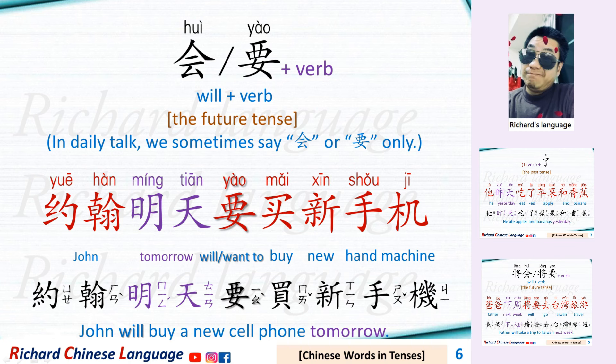会 or 要 plus a verb. This is the future tense. In daily conversations, we sometimes say 会 or 要 only. For example: 约翰明天要买新手机 — John will buy a new cell phone tomorrow.